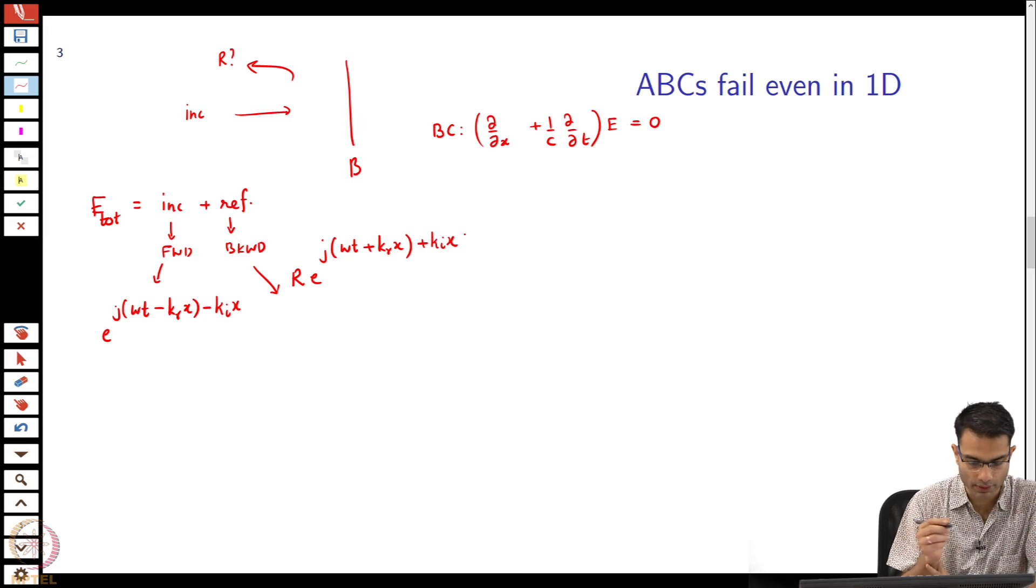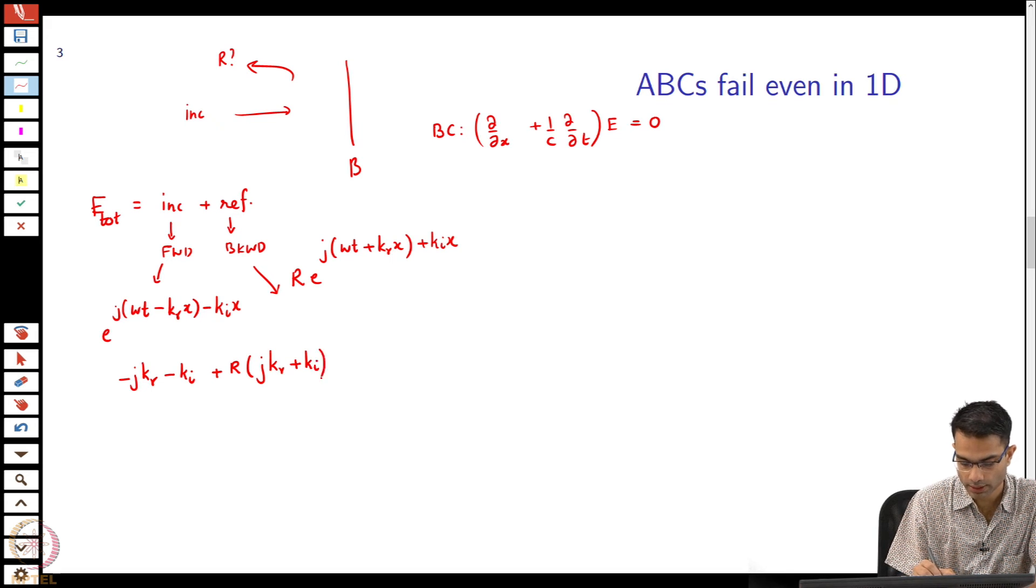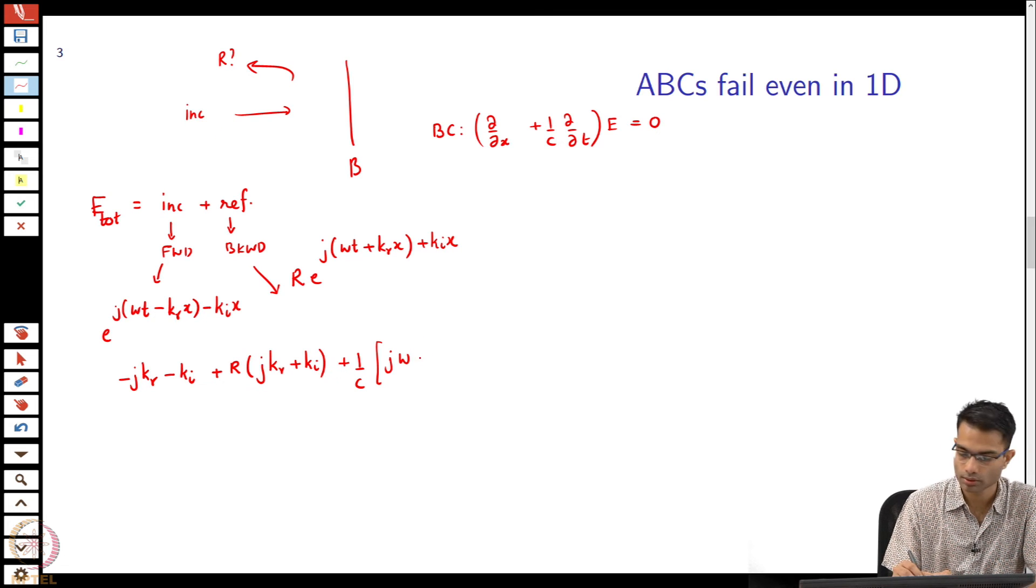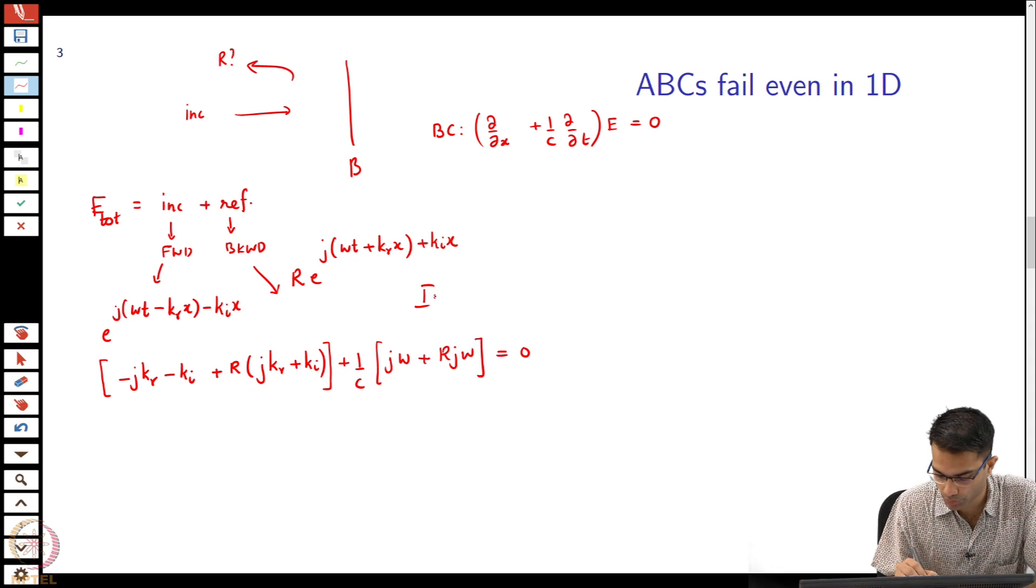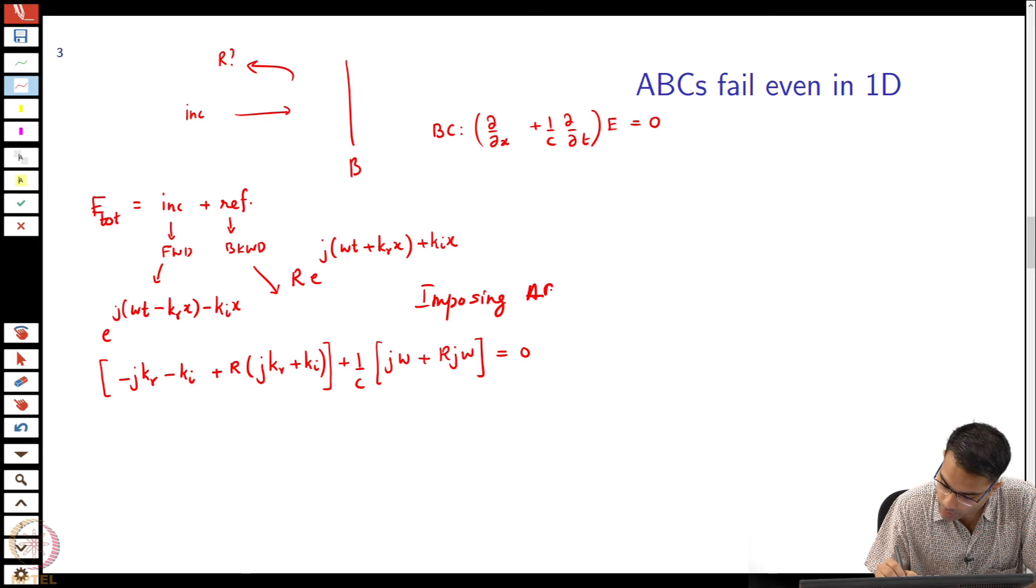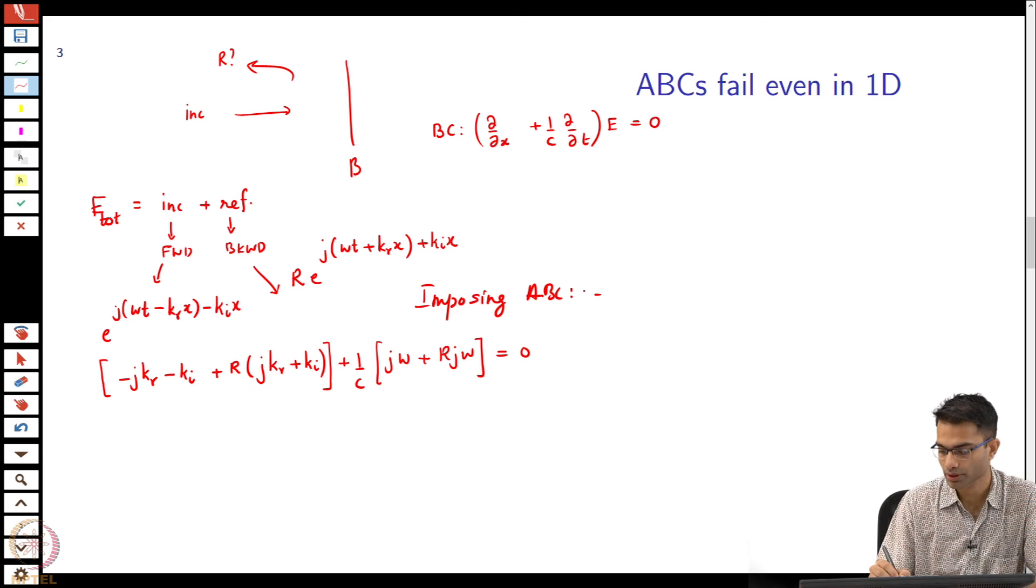Now I am going to put these two together and impose this boundary condition. The derivatives now will happen with respect to space first, dE/dx. What is the first term that I get? I get a minus j k_r, then I get a minus k_i, this is d by dx put on incident field, plus r times j k_r plus k_i. This takes care of the d by dx part. Then comes 1 by c, what is the time part? j omega plus r j omega equal to 0. This is imposing ABC.